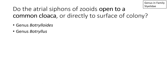It is also possible that the atrial siphons of the zooids don't open directly to the surface of the colony, but open to a common cloaca — a larger hole. Cloaca means 'sewer' in Latin, so it's a place where all the atrial siphons dump out their effluent, their waste, eggs, and sperm, and then that effluent is released through that larger opening, the cloaca.